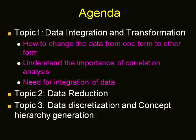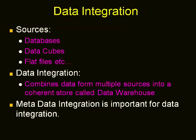The first topic is data integration and transformation. By understanding this topic, we are able to understand how to change the data from one form to another form. We also critically examine how correlation analysis is useful in detecting the redundancy among the data values. Data integration combines data from multiple sources — which may include databases, data cubes, flat files, etc. — into a coherent source, which we call a data warehouse.